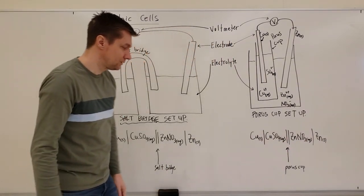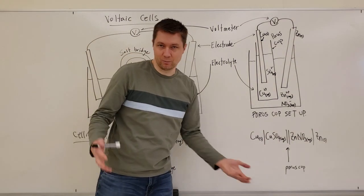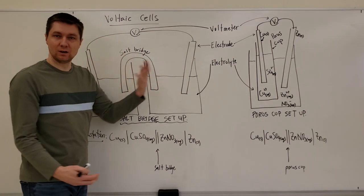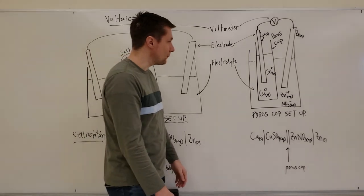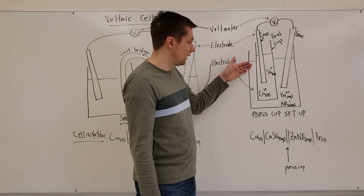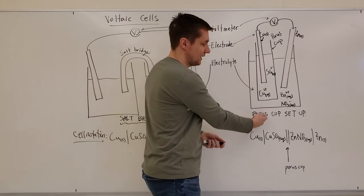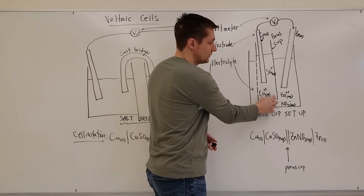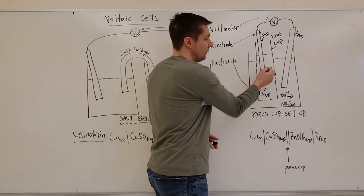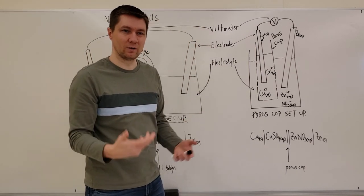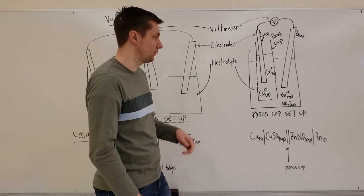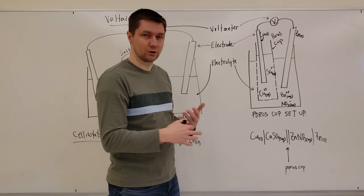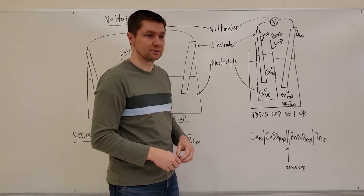The double line in cell notation represents either the salt bridge or the porous cup, depending on which setup you draw. You will see both types in questions. The porous cup has little holes in it, which allows ions to move - we'll talk about exactly where the ions are moving as we get further into the example. As the electric current is generated through the spontaneous reaction, things start to move back and forth.